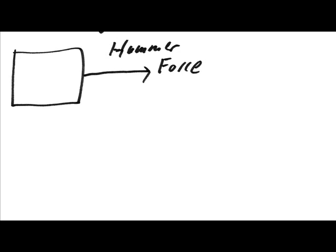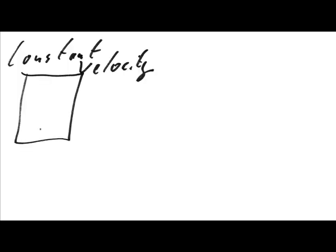Our box will slow down and eventually stop, because we have frictional forces at play in our system. These frictional forces can be represented as arrows on the edge of the box, pointing in the opposite direction to the hammer blow.